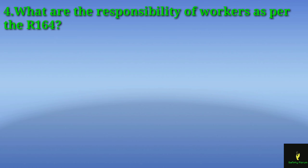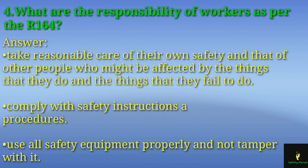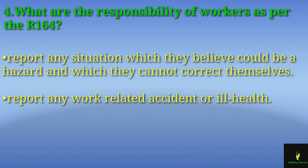The fourth question is: what are the responsibilities of workers as per R164? Workers must take reasonable care of their own safety and that of others who might be affected by their actions or omissions at the worksite. They must comply with safety instructions and procedures, use safety equipment properly and not tamper with it, report any hazard they cannot correct themselves to their supervisor, and report any work-related accident or ill health to management.